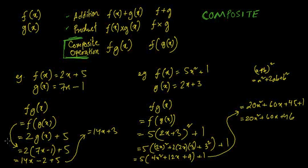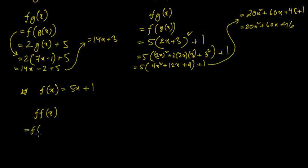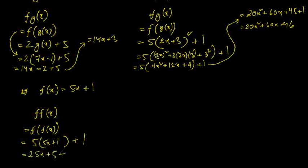In composite functions they might also ask for f(f(x)). For example, f(x) = 5x + 1: f(f(x)) = 5(f(x)) + 1 = 5(5x + 1) + 1 = 25x + 5 + 1 = 25x + 6. That's how it works.